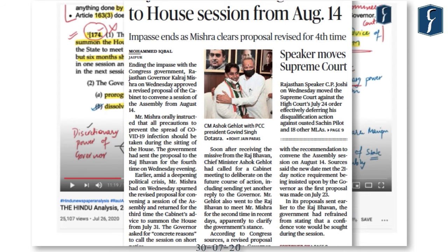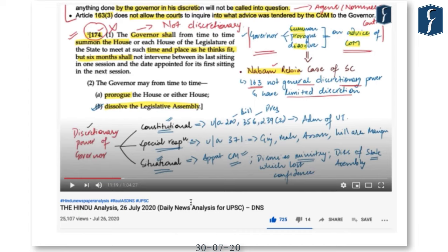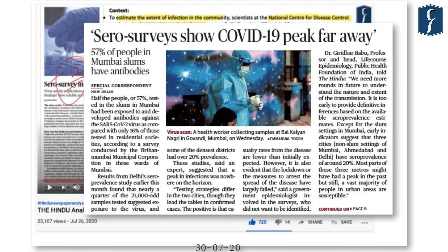The article on page 1 — 'Rajasthan Governor gives nod to House session from August 14' — involves discussion about the powers of the Governor, especially with respect to the aid and advice of the council of ministers. This topic was already covered in DNS dated 26th of July 2020, where constitutional provisions dealing with the powers of the Governor and discretionary powers were discussed. To find that video, search 'DNS 26 July 2020' on YouTube.